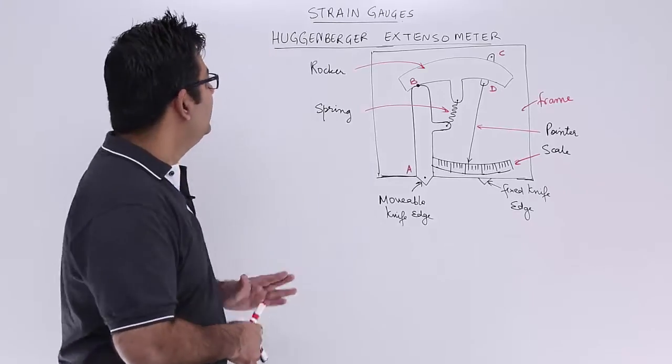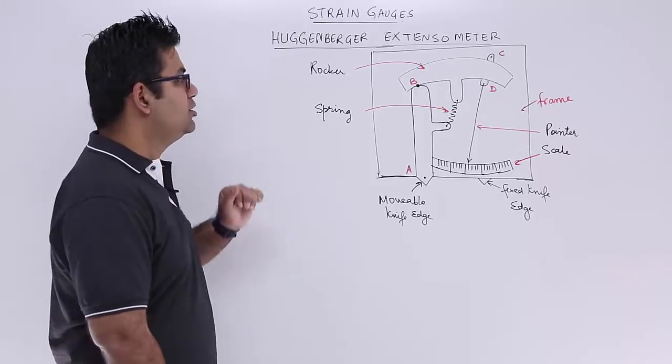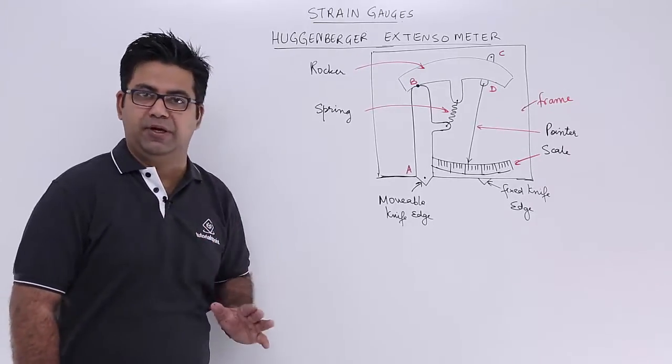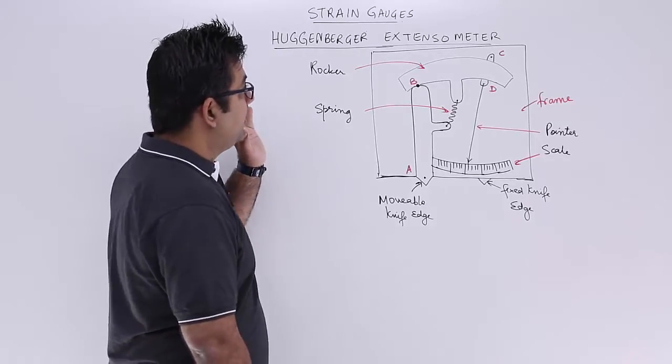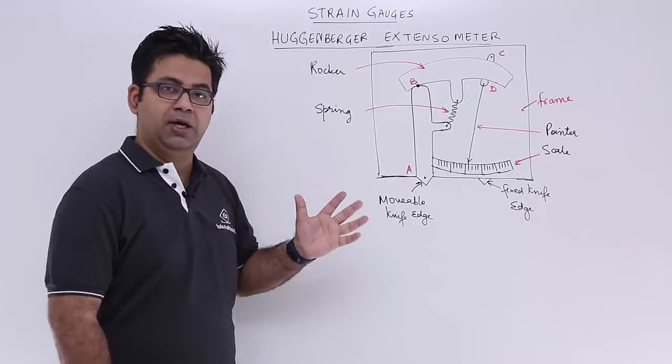Now let's talk about the last of the extensometers, that is the Hugenberger extensometer. Now this is used for surface measurements and this is again an extensometer which makes use of mechanical magnification.